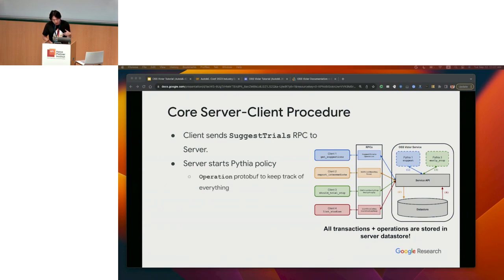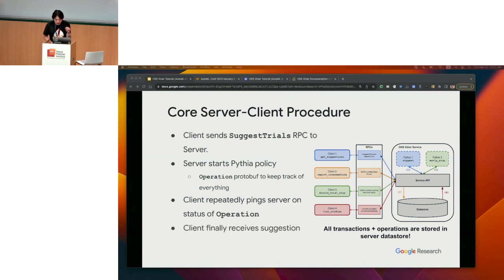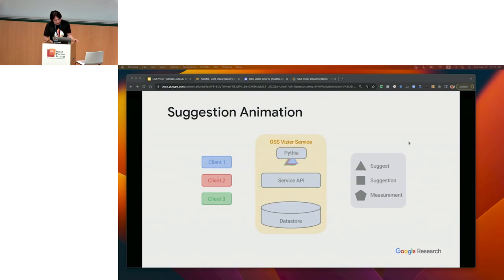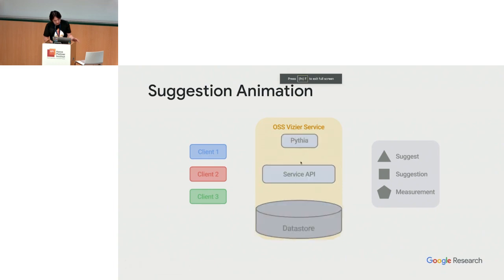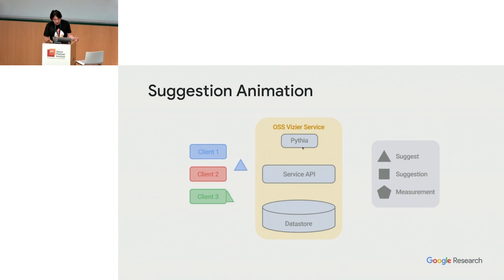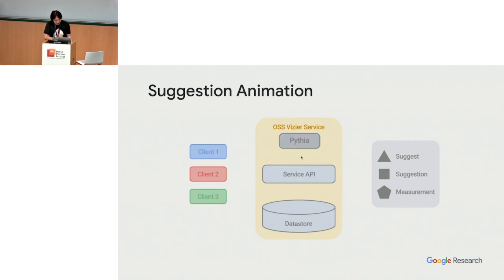The client keeps pinging the server — 'are you done yet?' — to verify the status of the operation. Finally, the client receives a suggestion once it's successful. In the animation, multiple clients all talk to the service, which processes requests and sends them to the Pythia service — an algorithm service. It also keeps track of everything and saves it all to the data store for safekeeping, in case any of these APIs go down or any machines fail.